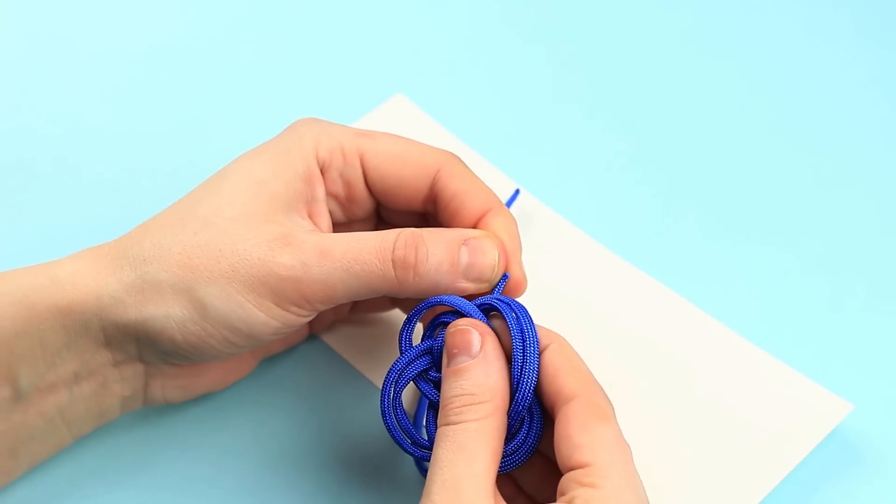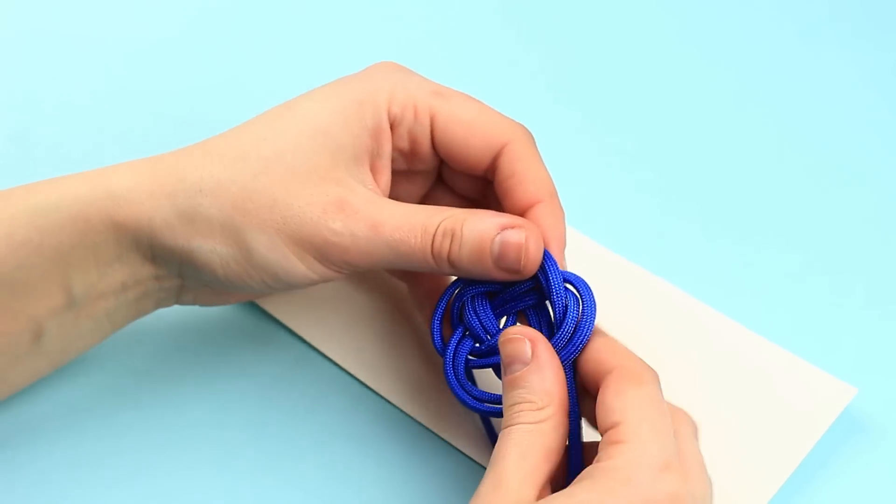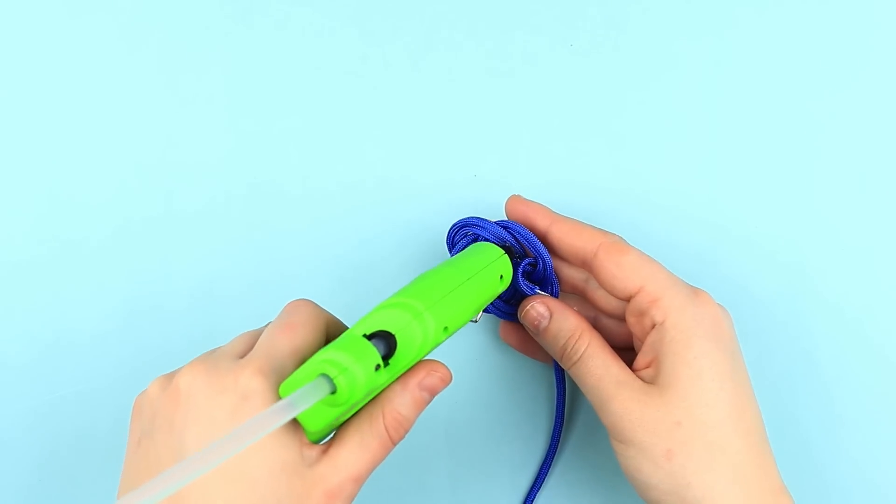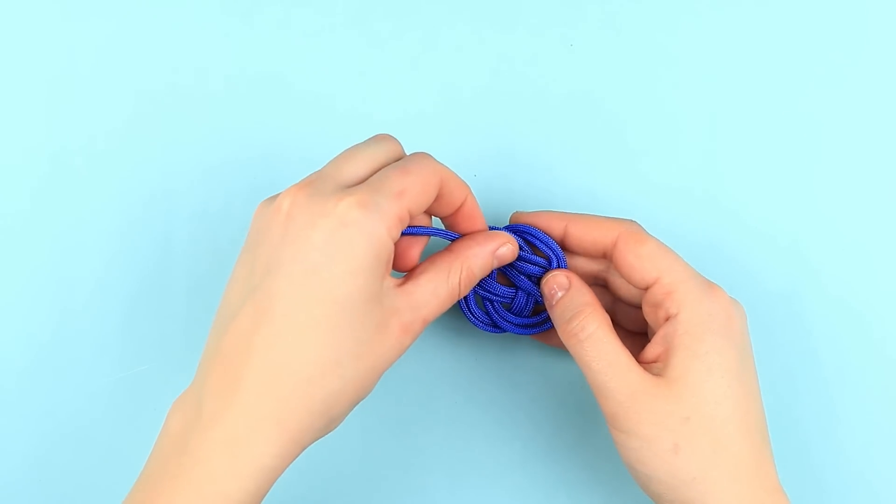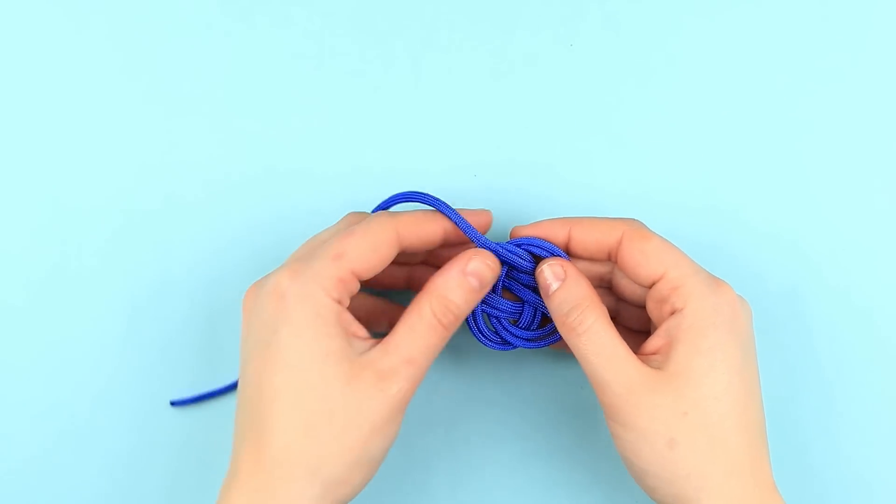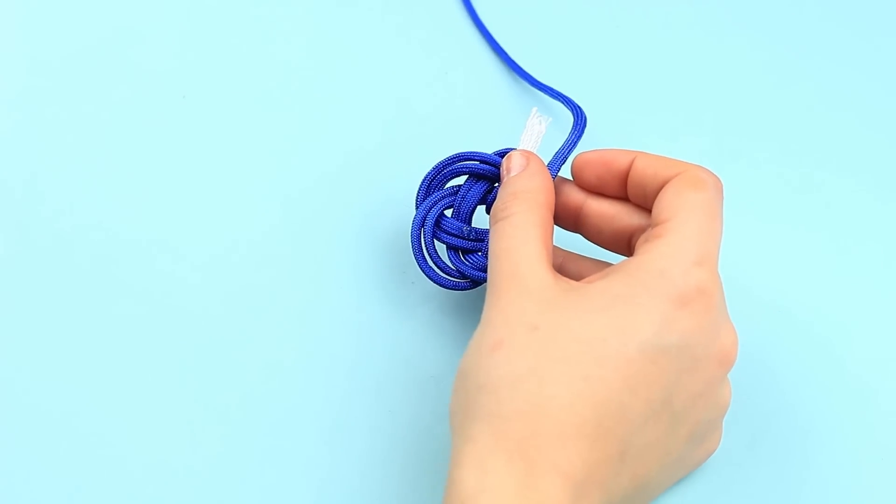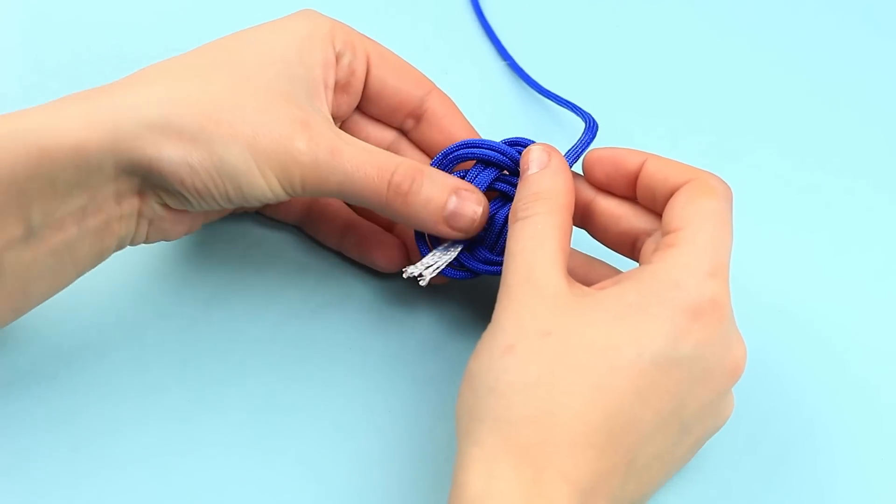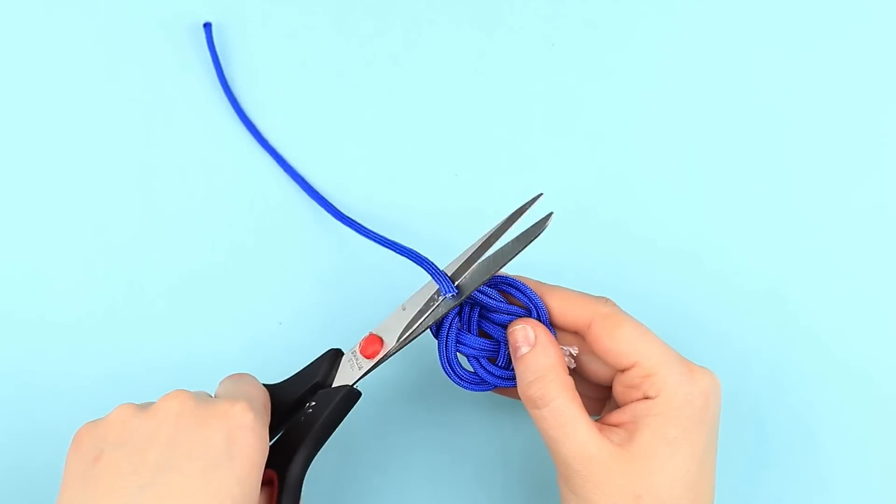Pull up the knot from both sides. Hot glue the cord ends. Cut off the excess.